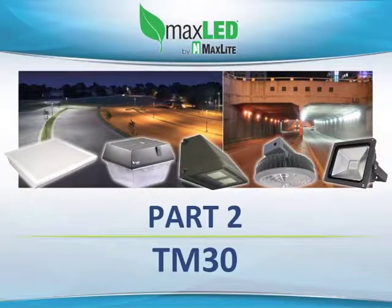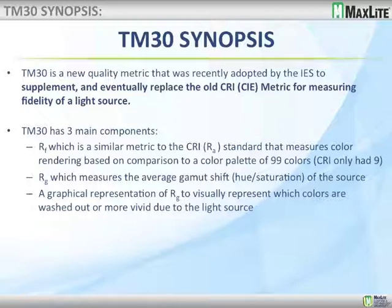Now let's move on to TM30. TM30 is a new quality metric recently adopted by the IES to supplement and eventually replace the old CRI — the CIE metric for measuring fidelity of a light source. It has three main components. One is the RF, which is similar to the CRI RA standard and measures color rendering based on a comparison to a palette of 99 colors, where CRI only measured 9. The RG, or gamut, measures the average gamut shift — hue and saturation — of a light source, and then a graphical representation of the RG gamut visually shows which colors are washed out or more vivid.